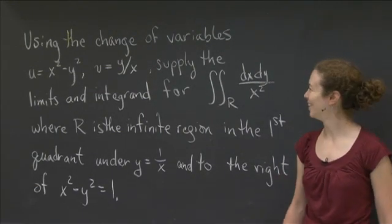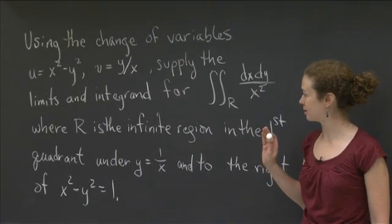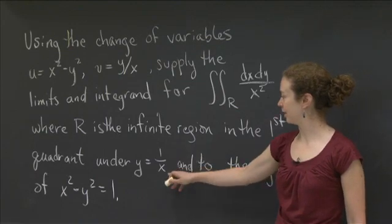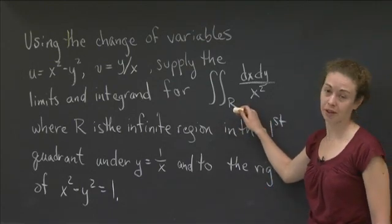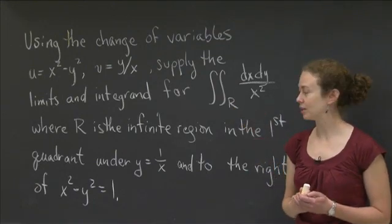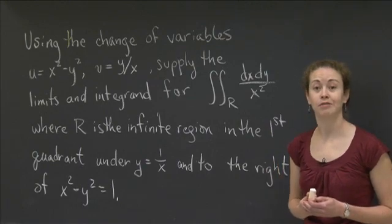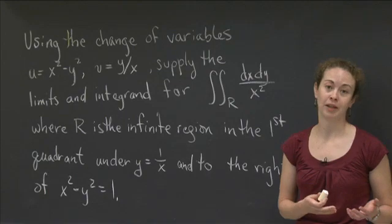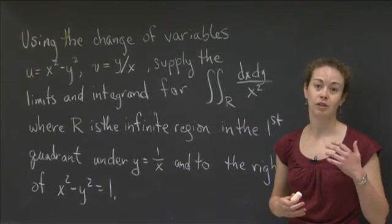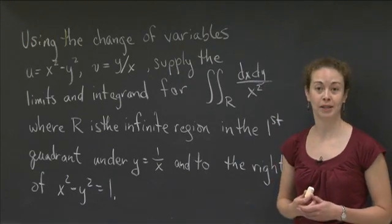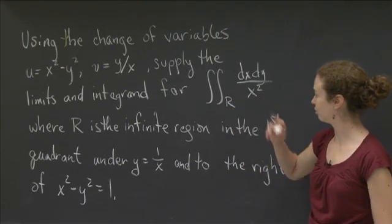Welcome back. So again, what we want to do is this change of variables problem where we've defined u to be x squared minus y squared, v to be y divided by x, and we have this region in the first quadrant — it's infinite, it's under y equals 1 divided by x, and to the right of x squared minus y squared equals 1. To keep this organized: first I'll graph region R in the xy-plane, then figure out what R maps to in the uv-plane to get the limits, then determine the Jacobian, and combine everything to find the integrand.